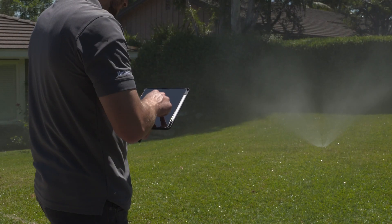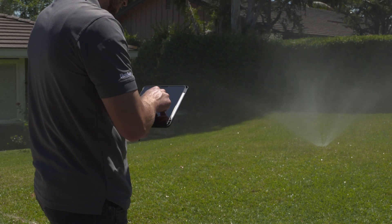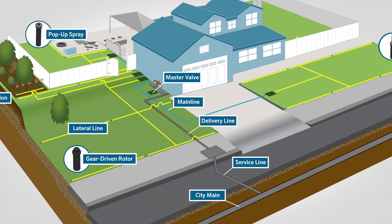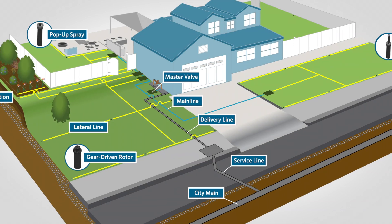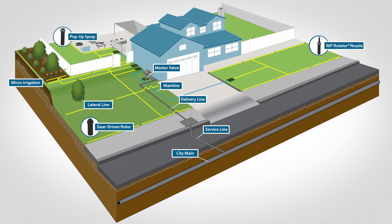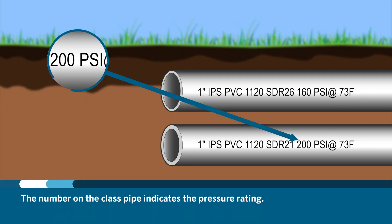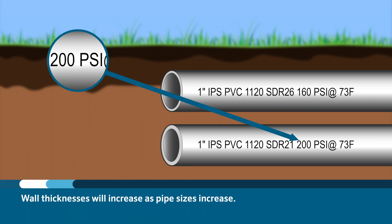Here are some common things to remember when choosing what type of pipe to use for your mainline and laterals. Mainlines commonly remain pressurized 24/7 while lateral lines are only pressurized when a station is running. This will be important to remember when selecting between schedule 40 and class pipe. The number on class pipe — for instance, class 200 or class 315 — indicates what the pressure rating is for that type of pipe. Class pipe will normally be very thin walled at small sizes and wall thicknesses will increase as pipe sizes increase.